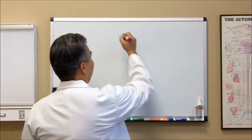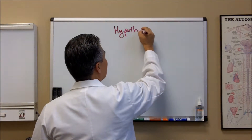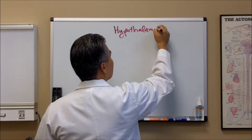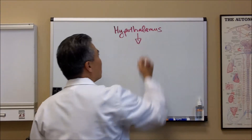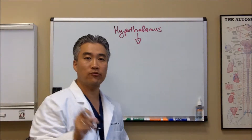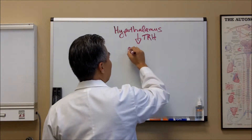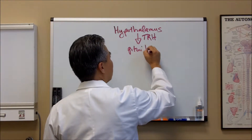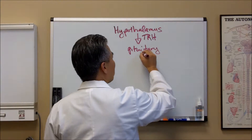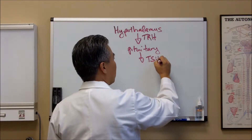The thyroid gland really starts up in the brain, called the hypothalamus. The hypothalamus produces a hormone called thyroid-releasing hormone, which goes down into the pituitary gland, and the pituitary gland releases thyroid-stimulating hormone.